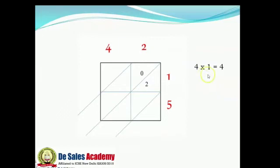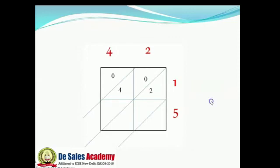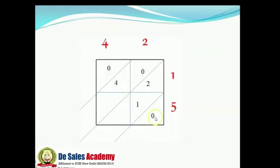Next, 4 times 1 equals 4. Therefore, 4 will be in the lower triangle and the upper triangle will be occupied by 0. In the same way, 2 times 5 equals 10. Here, 1 is in the upper triangle and 0 is in the lower triangle. Similarly, we can complete 4 times 5 also.